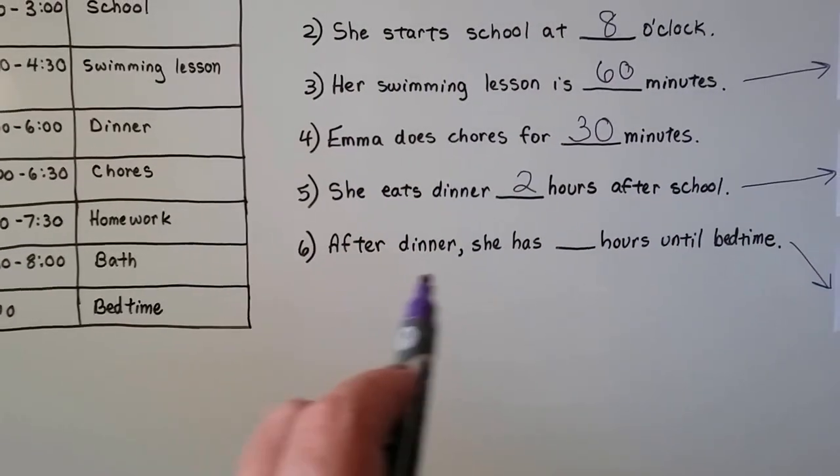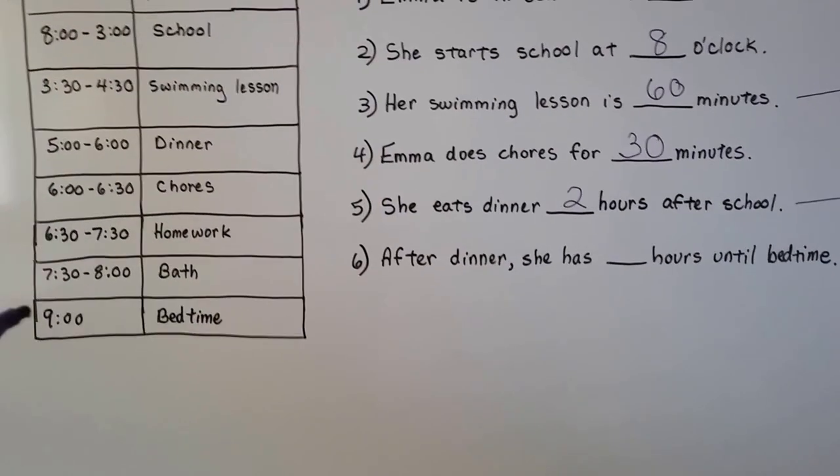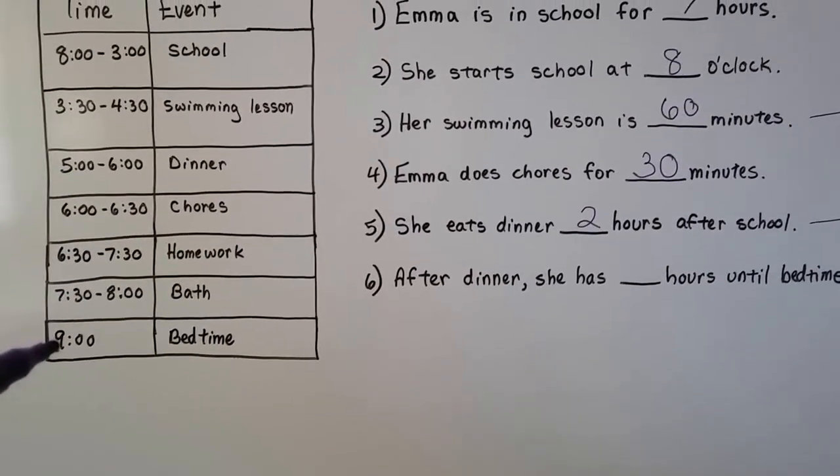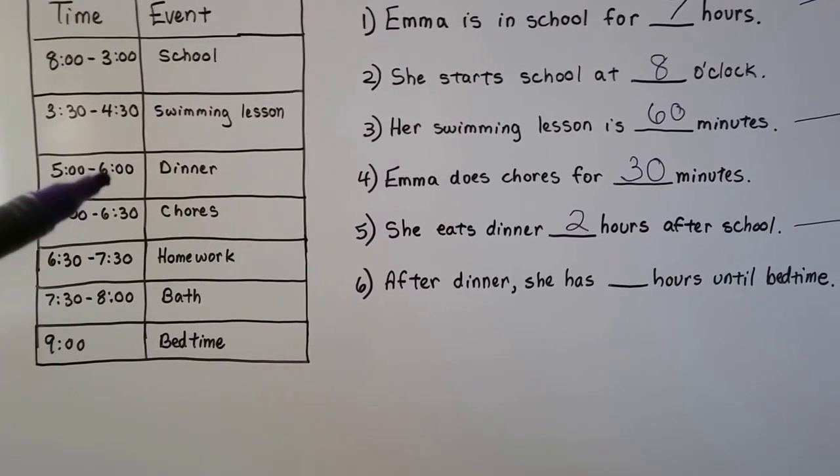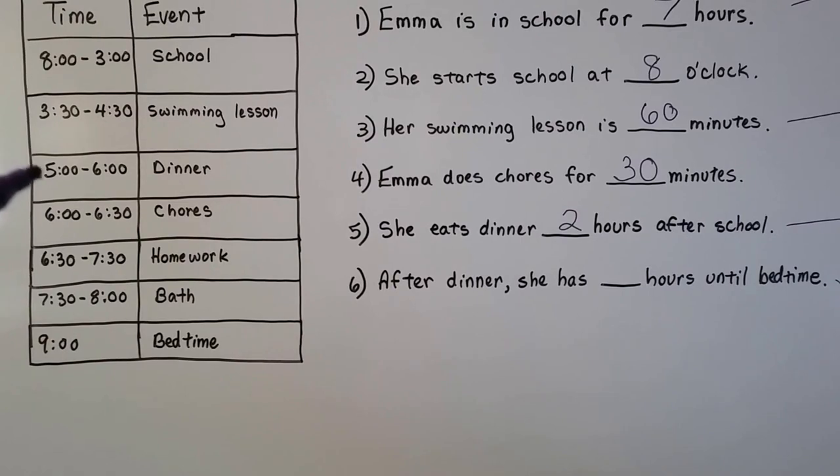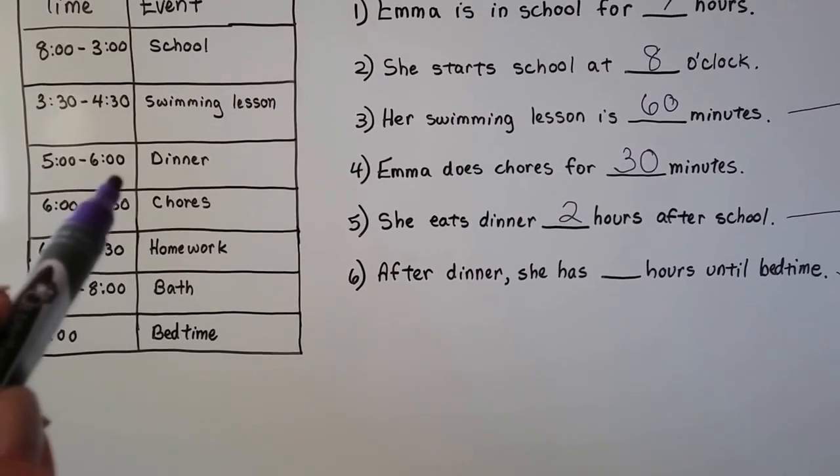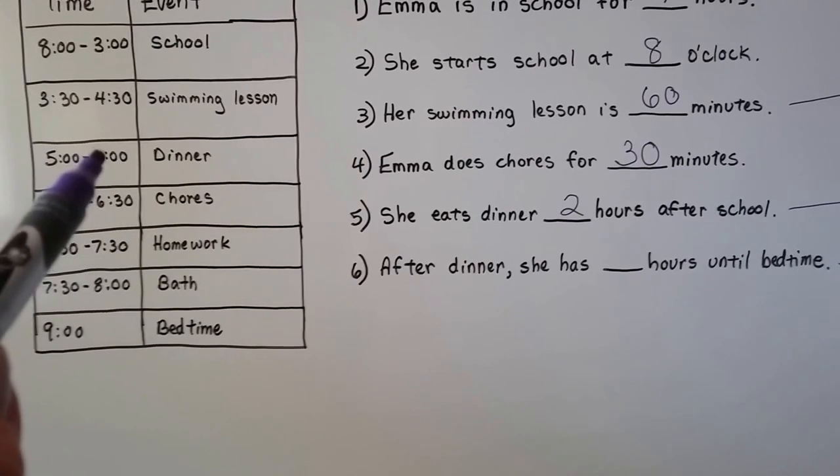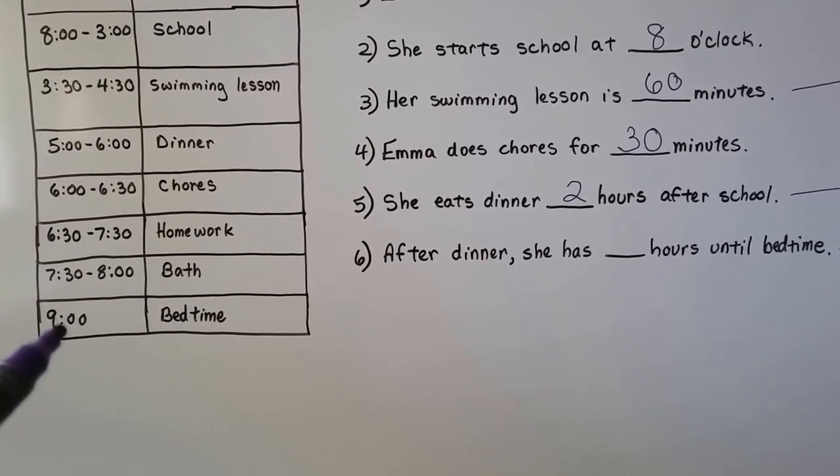This last one says, after dinner she has blank hours until bedtime. Well, her bedtime is at 9 o'clock. After dinner, her dinner ends at 6, it goes from 5 o'clock to 6 o'clock. So after dinner, that would be the 6 o'clock, she has blank hours until bedtime. So we have to go from 6 o'clock to 9 o'clock.